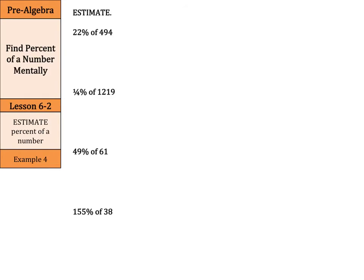Now, in all caps, estimate 22% of 494. Now, the neat thing here is that you can round both numbers here. Now, 22% of 494, 22% is pretty close to 20%. And 494 is pretty close to 500. So the way you can think about this with our 20%, 20% is one-fifth times 500. And one-fifth of 500 is simply 100.